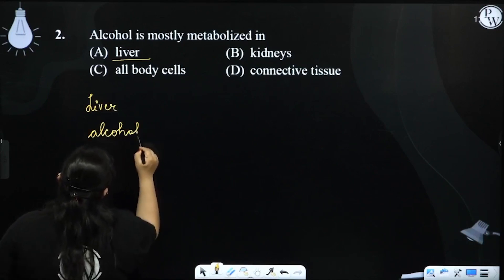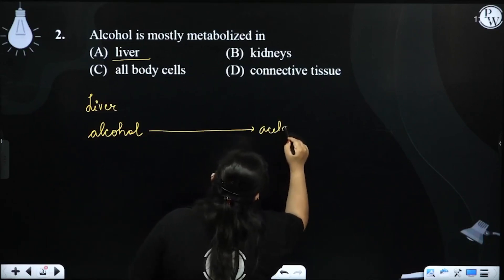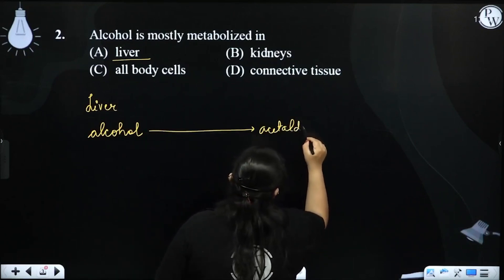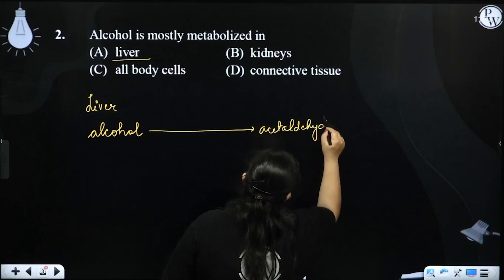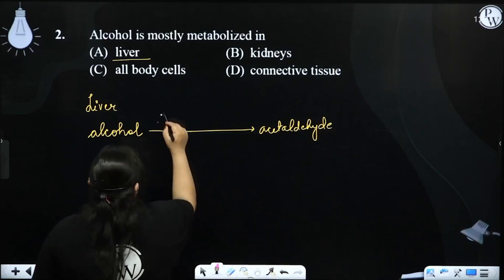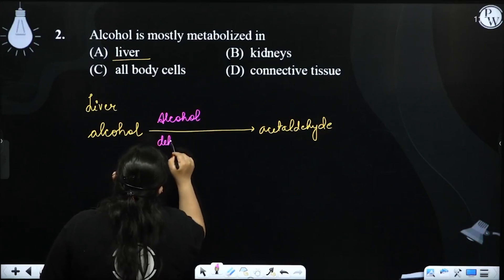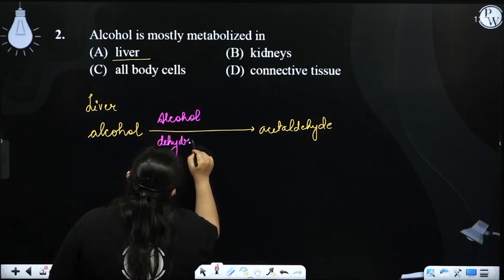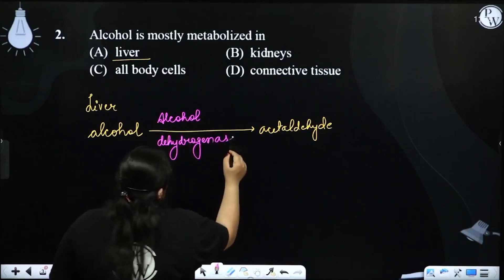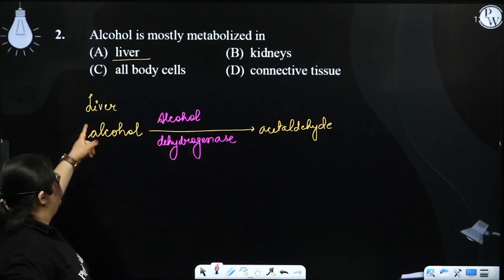Alcohol is converted into acetaldehyde by the help of enzyme alcohol dehydrogenase. This conversion of alcohol to aldehyde happens in the liver.